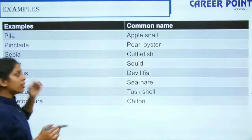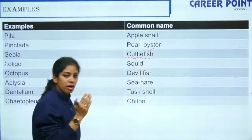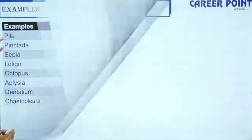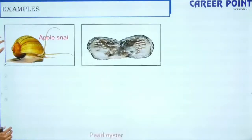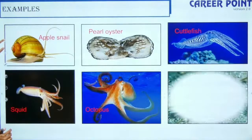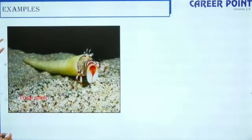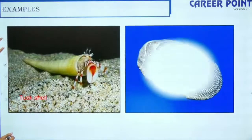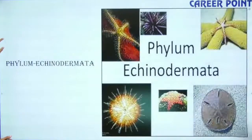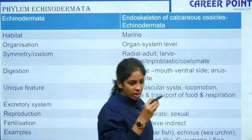Examples of Mollusca include apple snail, pearl oyster, cuttlefish, squid, octopus, sea hare, chiton, and tusk shell. Note that although it is called cuttlefish, it does not come under fish — it comes under Mollusca.